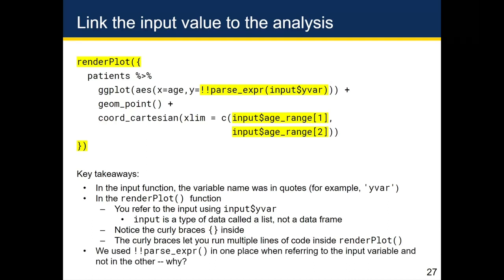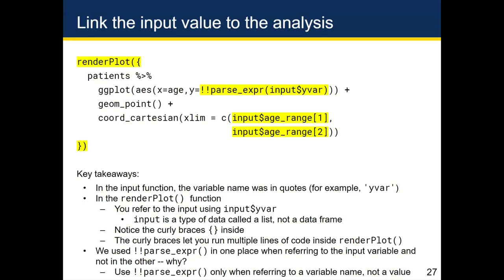We used parse_expr in one place when referring to the input variable and not in the other. The shortcut is: when you're referring to a variable name like height or weight, you've got to parse it. When you're just referring to a value like a number, you typically don't need to parse it and shouldn't.